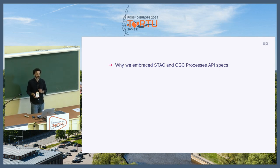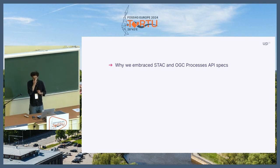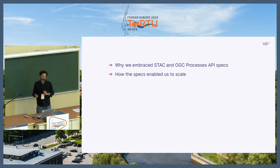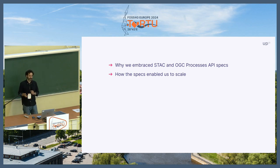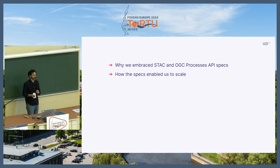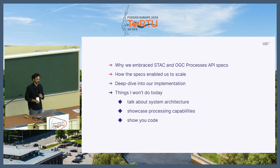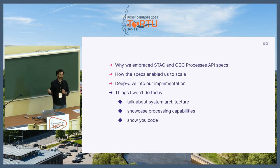In this presentation, I'm going to tell you how community specifications helped us design our products, in particular STAC and the OGC Processes API Core. STAC and OGC enabled us to scale. It took time to adjust our product to STAC and OGC specifications, but once that was done, they were adopted very quickly by our users and they enabled our engineering teams to design and develop faster. I will also show you a little bit about our implementation. I won't talk about system architecture.